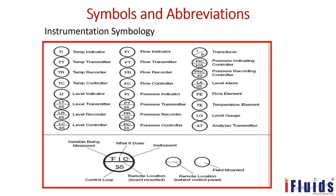These are the symbols and abbreviations used in the P&ID. There are different instrumentation symbols and equipment symbols. Equipment falls into two types: rotary equipment and static equipment. There are also process symbols, mechanical symbols, piping symbols, and electrical symbols — different types of symbols for each category.